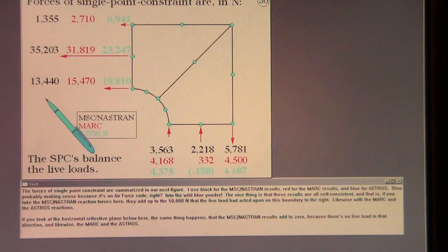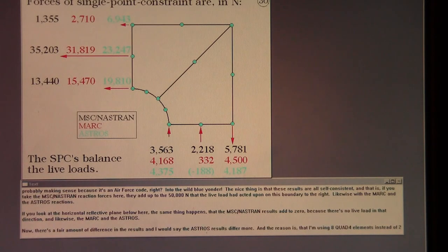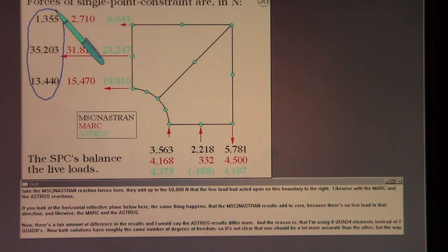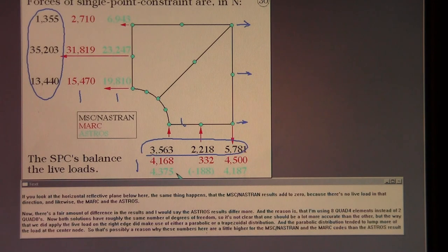The forces of single point constraint are summarized in our next figure. I use black for the MSC Nastran results, red for the MARC results, and blue for Astros. Blue probably making sense because it's an Air Force code, right? Into the wild blue yonder. Well, the nice thing is that these results are all self-consistent. And that is, if you take the Nastran reaction forces here, they add up to the 50,000 Newtons that the live load had acted upon on this boundary to the right. Likewise with the MARC and the Astros reactions. If you look at the horizontal reflective plane below here, the same thing happens. That the Nastran results add to zero because there's no live load in that direction. And likewise the MARC and the Astros.